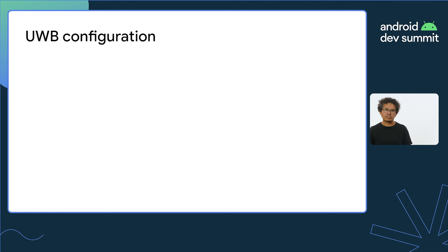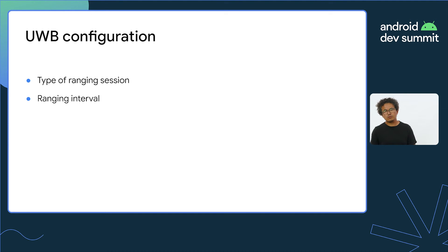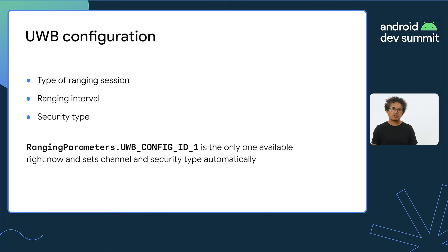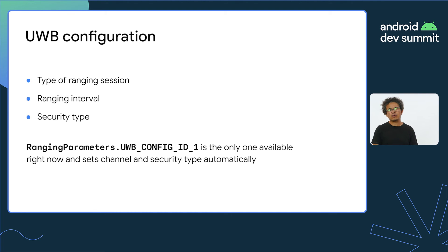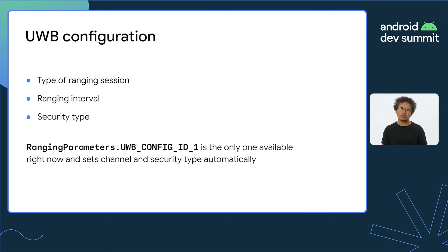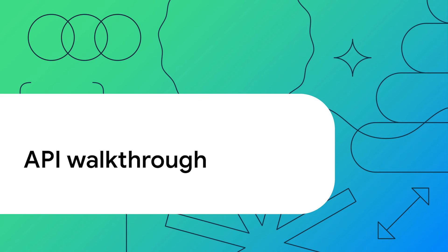The last thing you have to decide is the right configuration for your devices. The library provides configuration sets with predefined parameters like type of ranging session, ranging interval, security type, etc. In the current alpha version, however, there is only one available — configID1 — which when selected sets the channel and security type to static STS. We're working closely with our UWB partners to add more configuration sets in the future. With all those concepts out of the way, let's take a deep dive and finally look at some code.